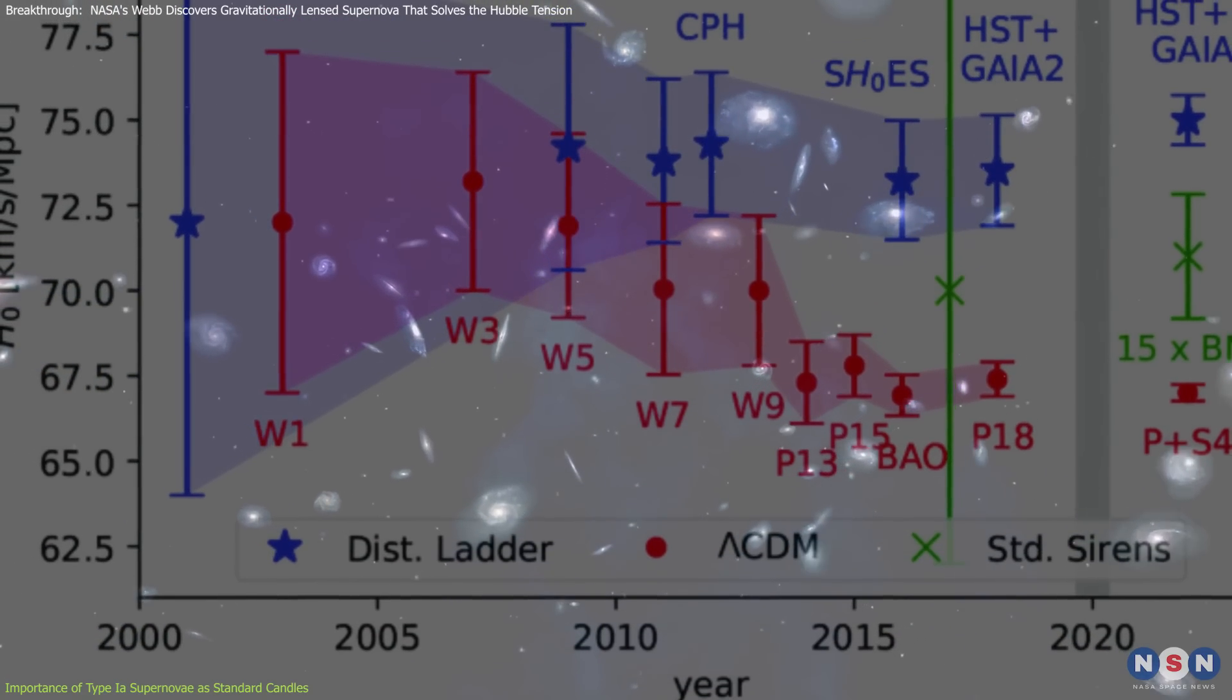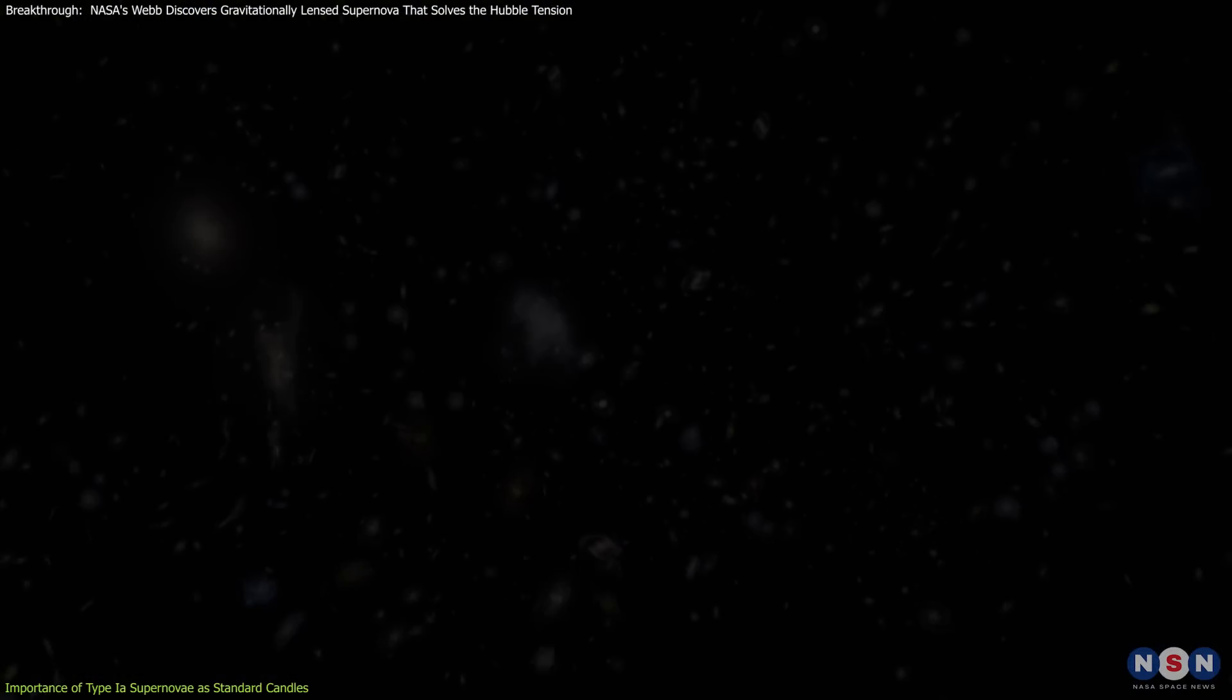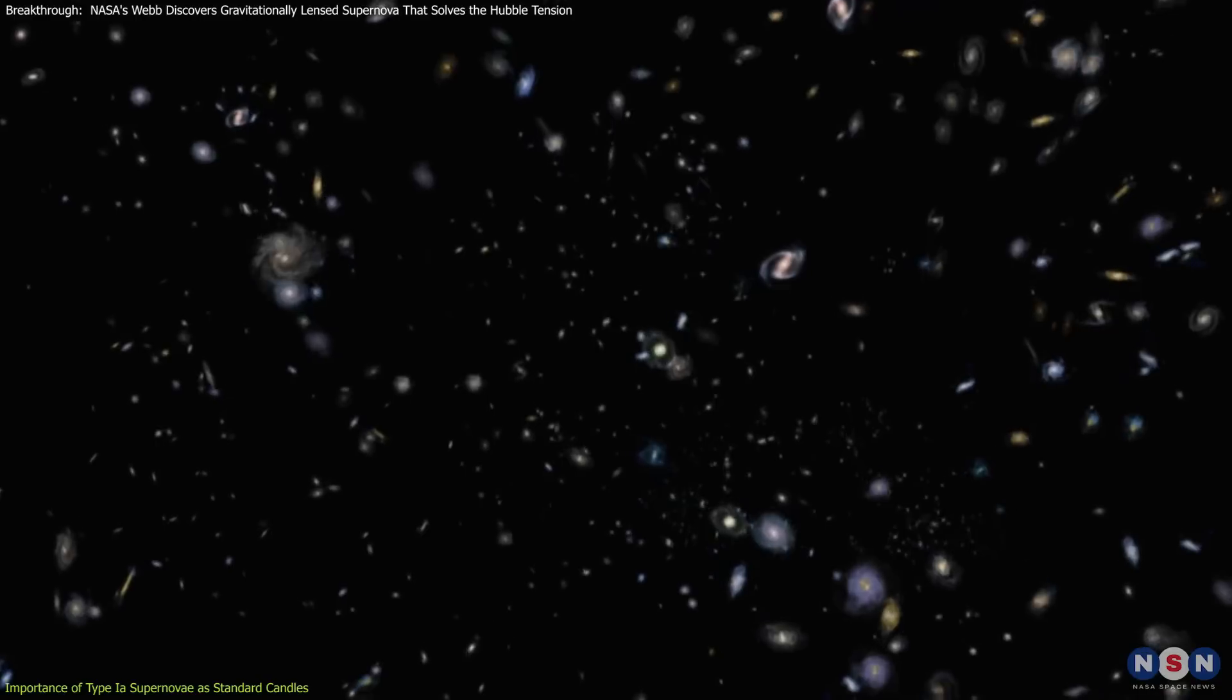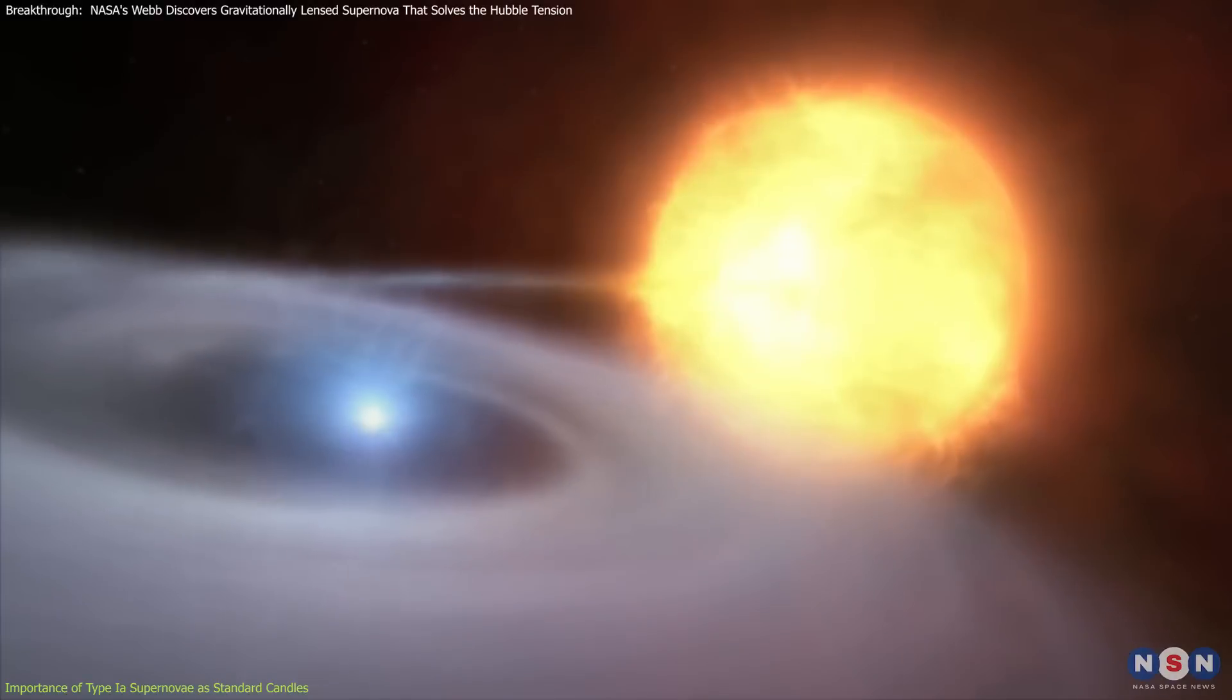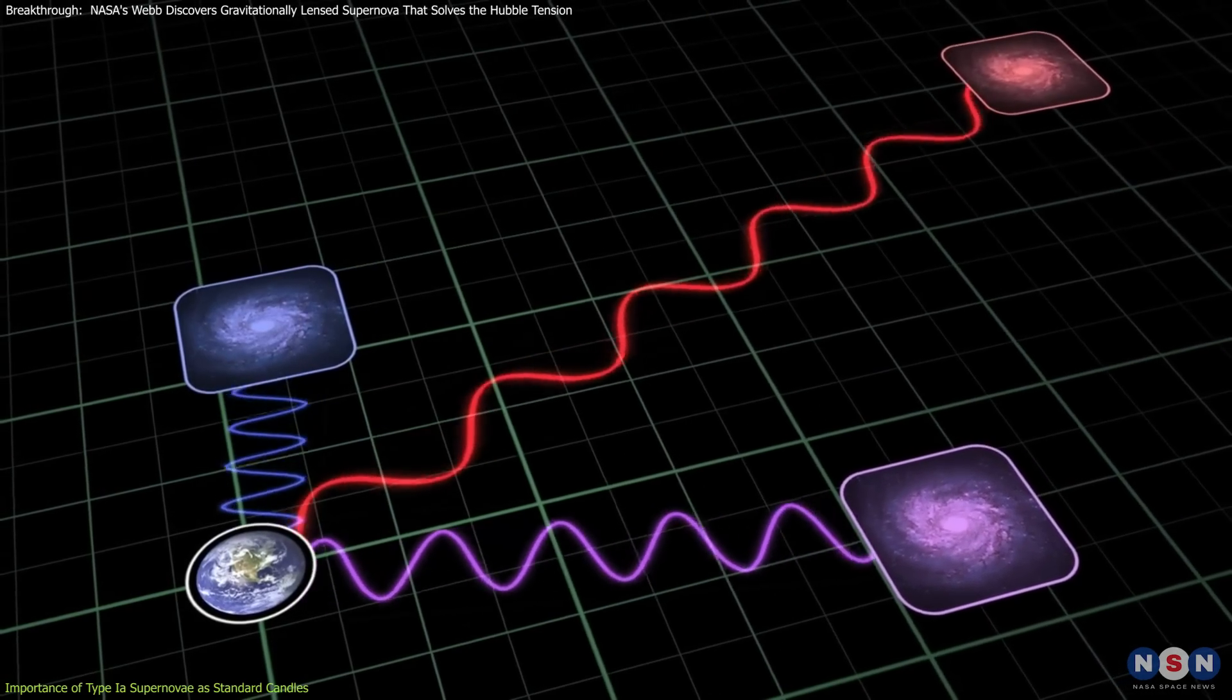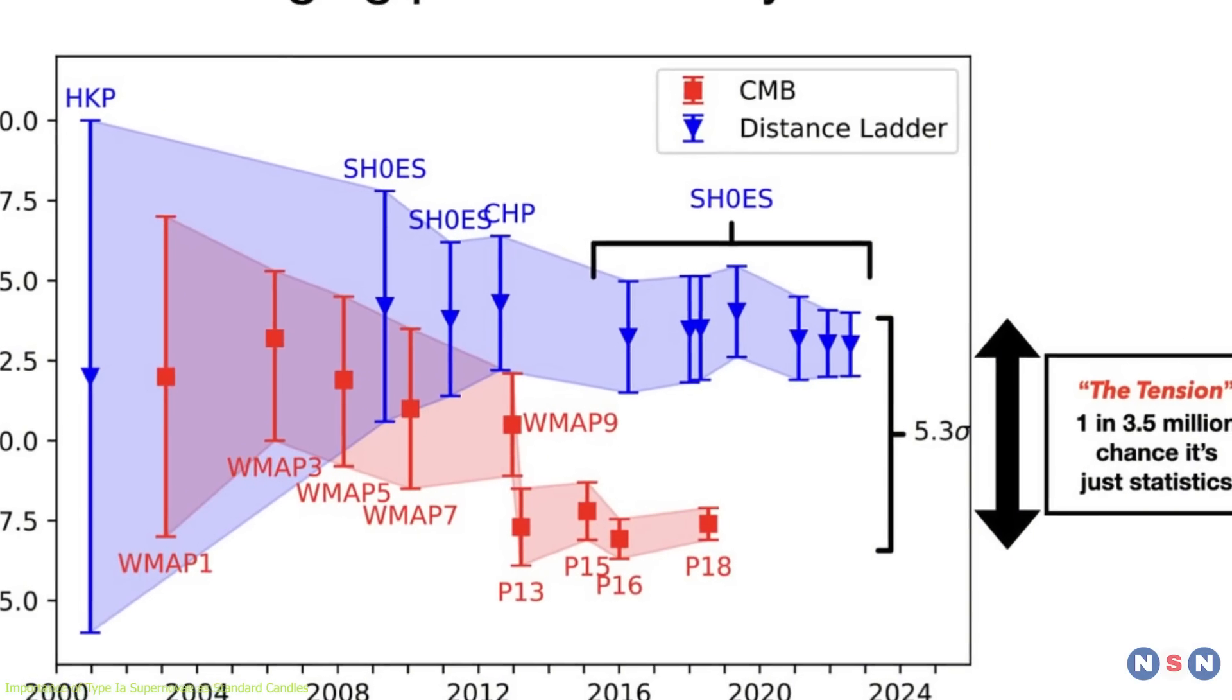This brings us to the Hubble constant, a key parameter in cosmology that describes the universe's expansion rate. To measure it, astronomers need two pieces of information: the distance to faraway galaxies, and the speed at which they are receding. This type of supernova provides the distance, while redshift, the stretching of light caused by the universe's expansion, reveals the velocity.